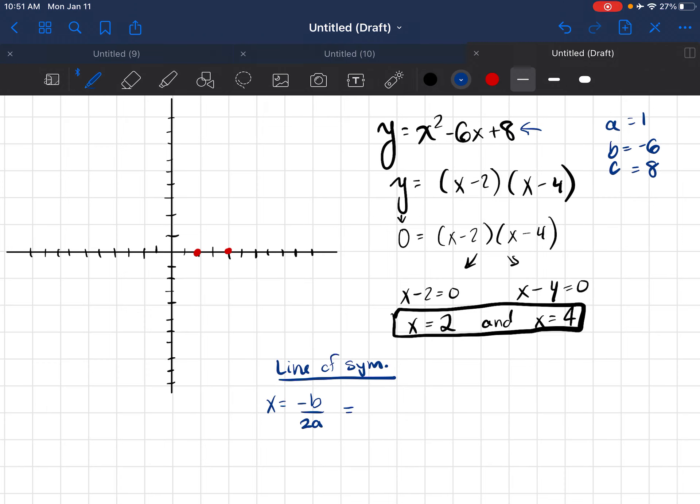So I can come back here. Negative b is going to be negative negative 6 divided by 2 times a, or 1. I know that a negative and a negative is positive, so positive 6 divided by 2. And 6 divided by 2 is 3. The line of symmetry is 3.